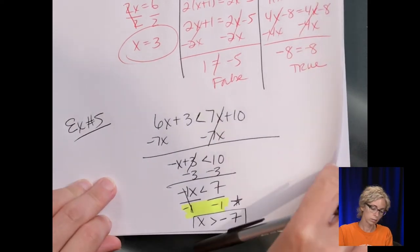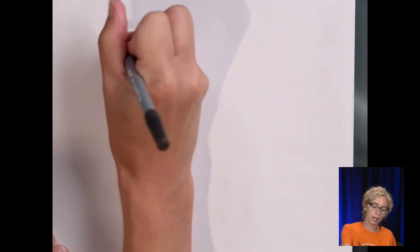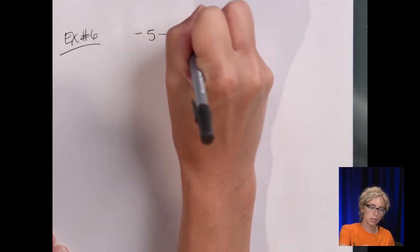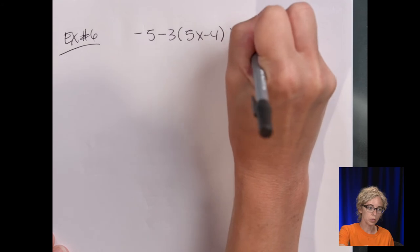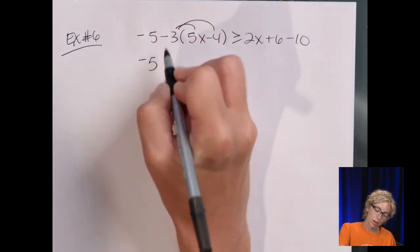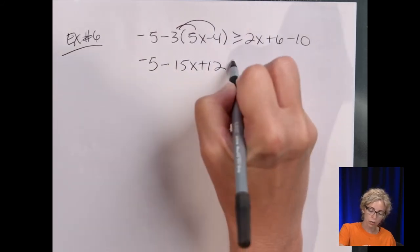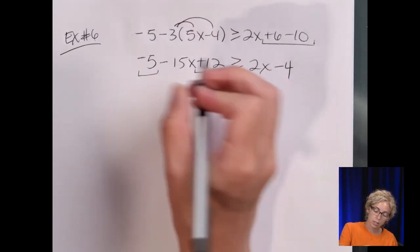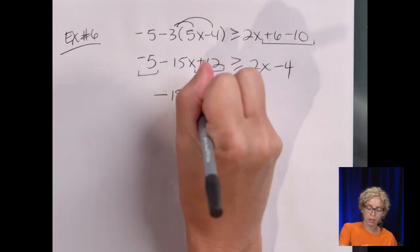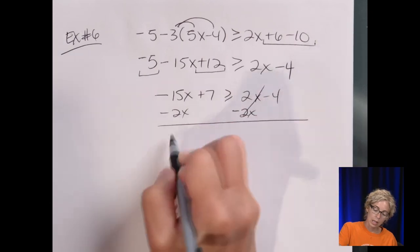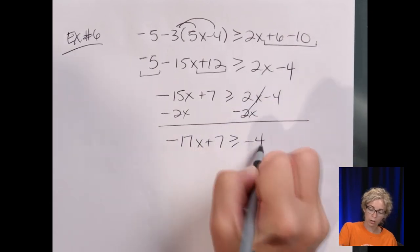So, something a little bit harder is in the next section. So, let's take a look at, so this is example number 6. Now, let's do -5 - 3(5x - 4) greater than or equal to 2x + 6 - 10. So, just applying the distributive property. So, let's remove parentheses. -5 - 15x + 12 greater than or equal to 2x. Well, I'm not going to copy it down. I'm going to combine like terms. Minus 4. Now, the only like terms here are the constants. So, let's copy down the term -15x and 12 - 5 is 7.